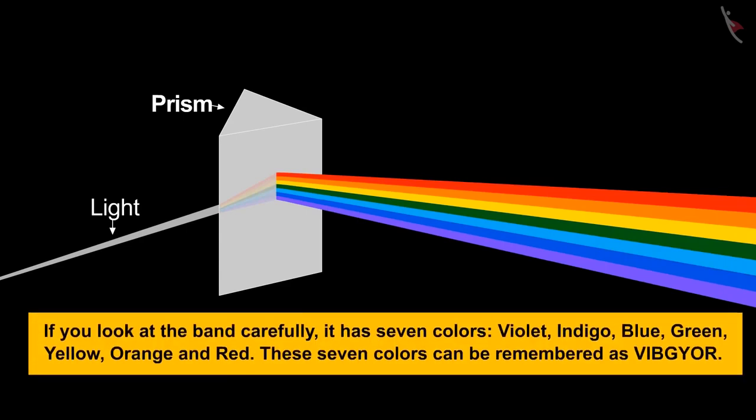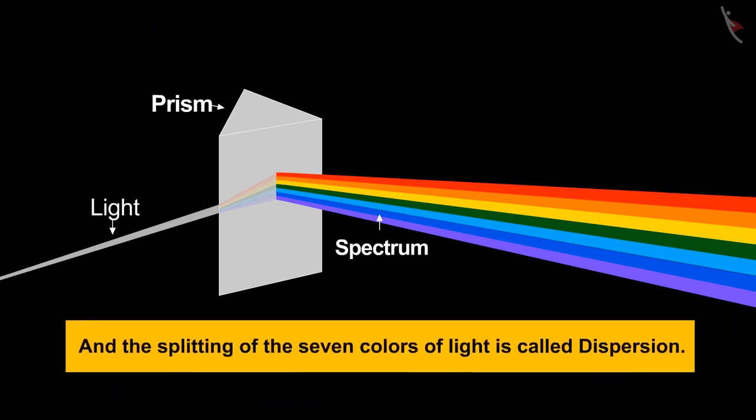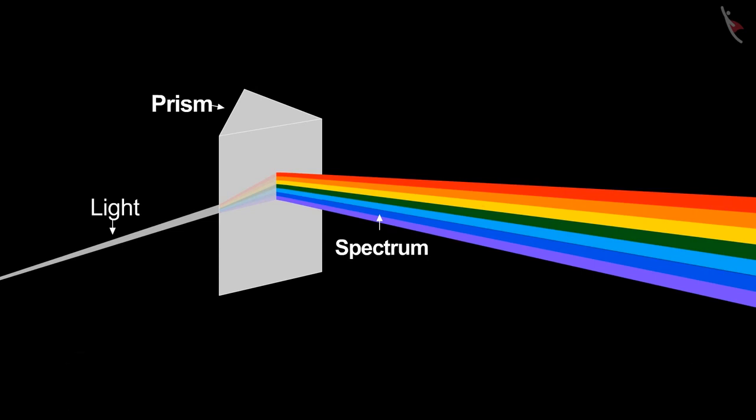If you look at the band carefully, it has seven colors in it: violet, indigo, blue, green, yellow, orange and red. These seven colors can be remembered as VIBGYOR. This strip of colors is called the spectrum of light and the splitting of the seven colors of light is called dispersion. The prism refracts light and changes its direction. If you look carefully, then you'll find that each color makes a different angle with the prism and travels on its own path.